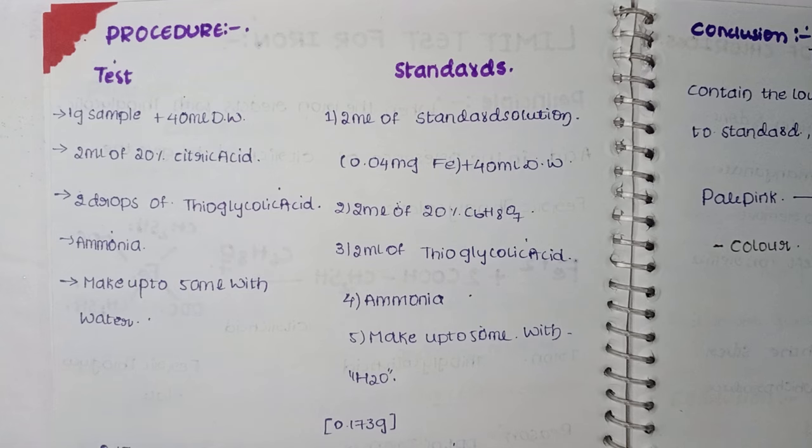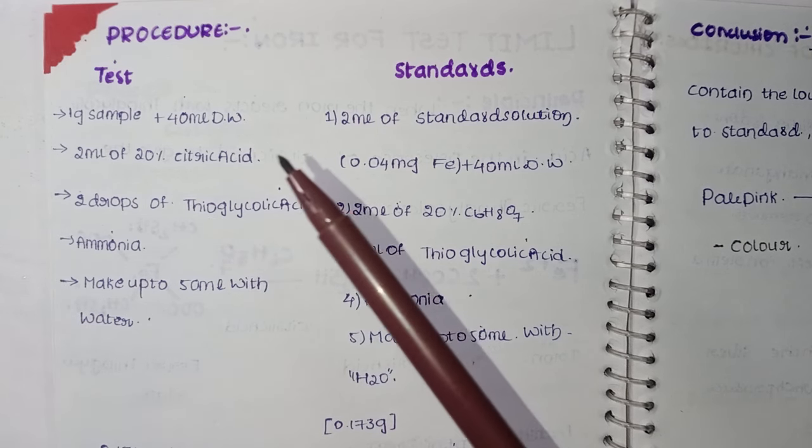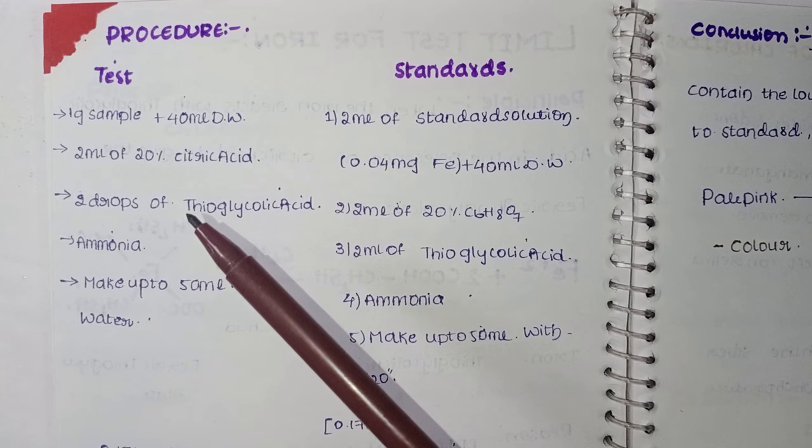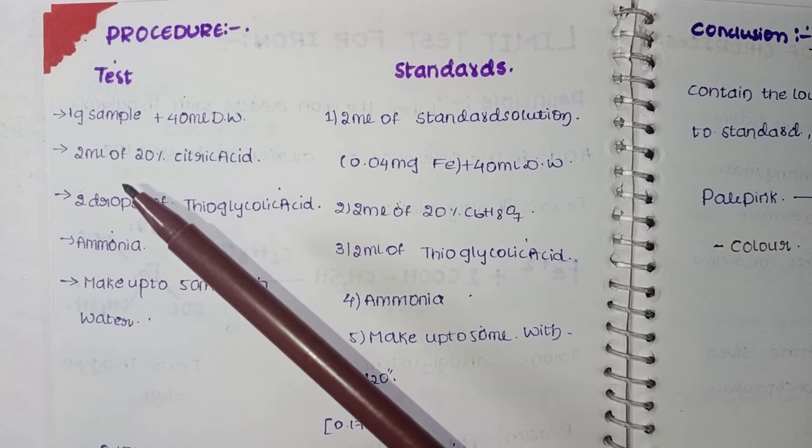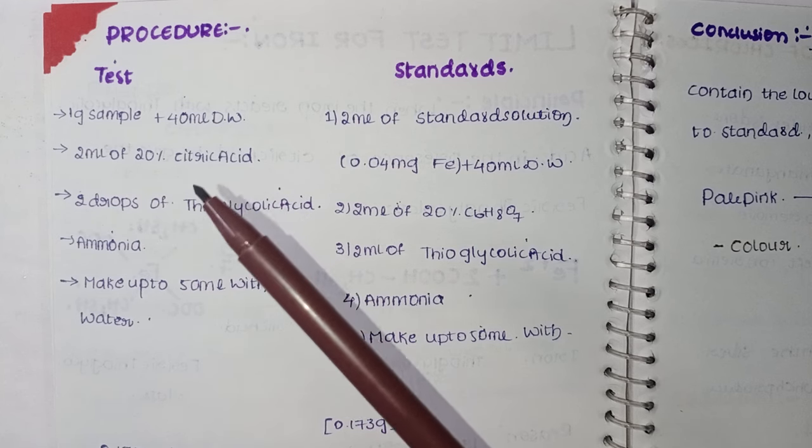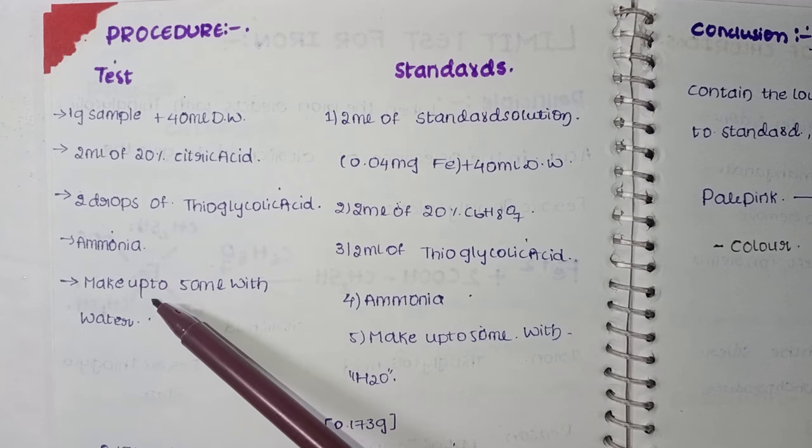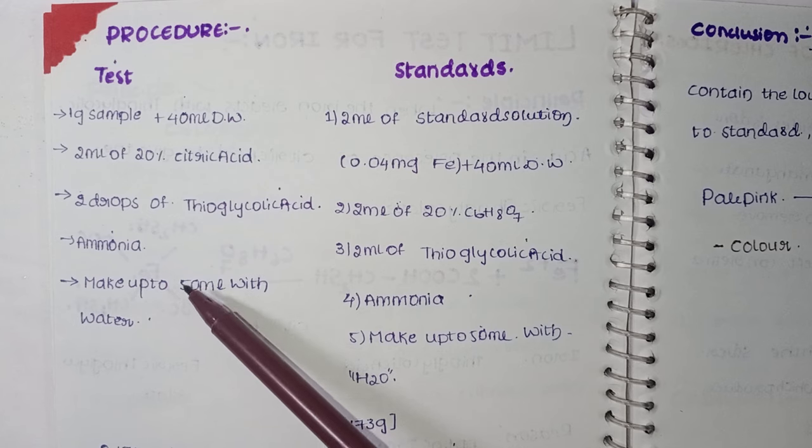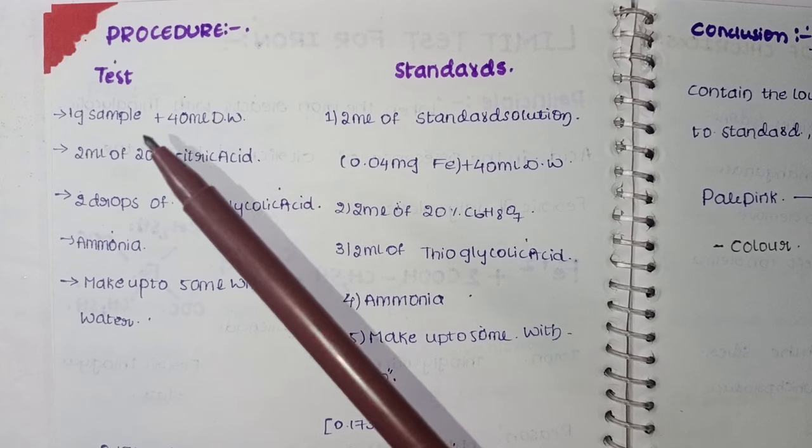For the procedure - test preparation: Take 1 gram sample in 40 ml distilled water, add 2 ml of 20% citric acid, add 3 drops of thioglycolic acid, add ammonia, and make up to 50 ml with water.